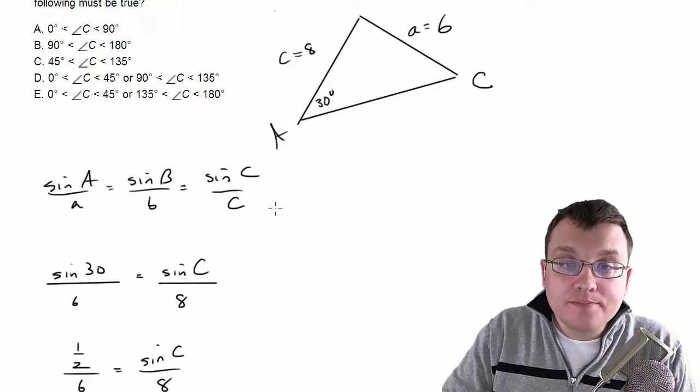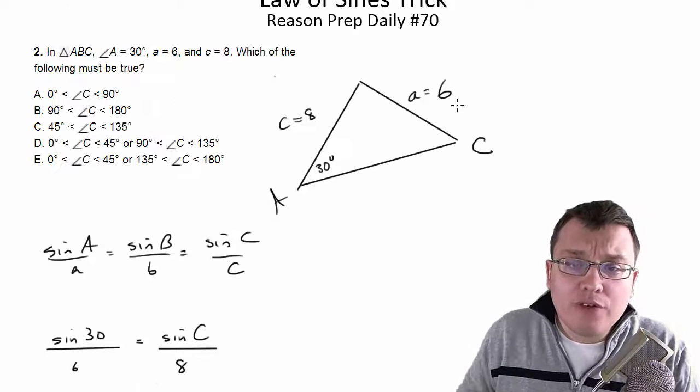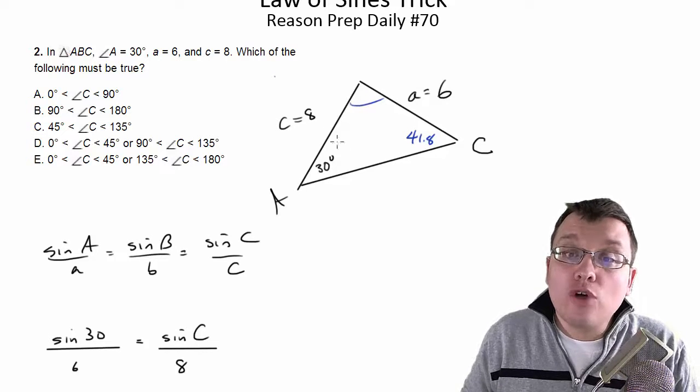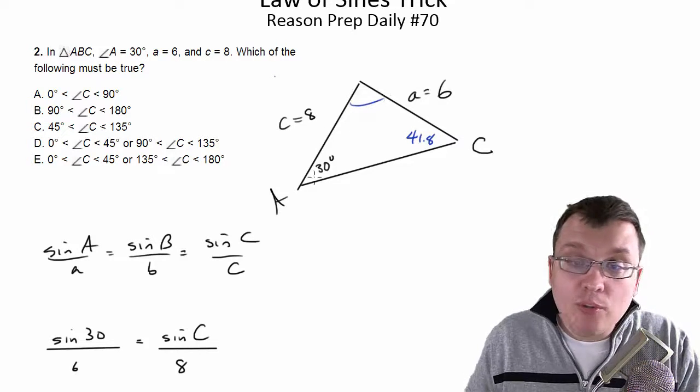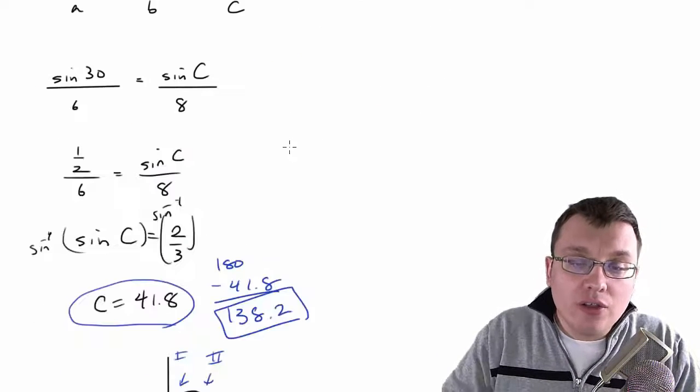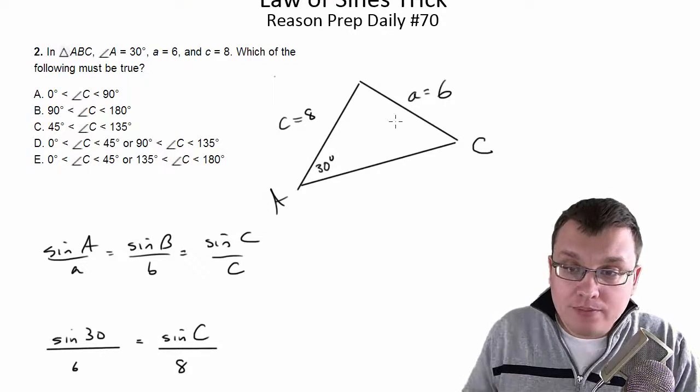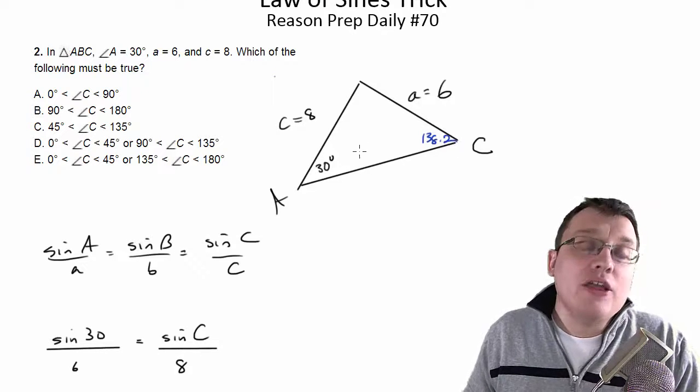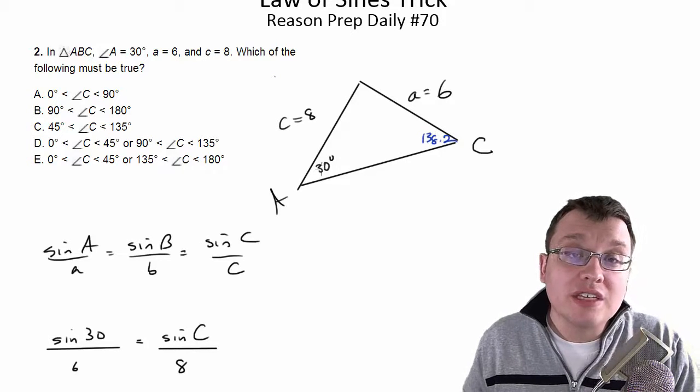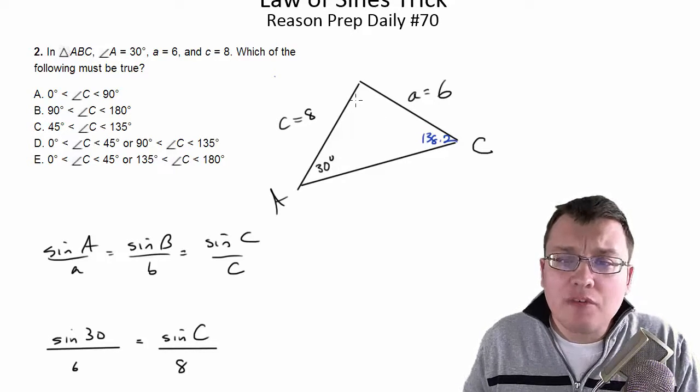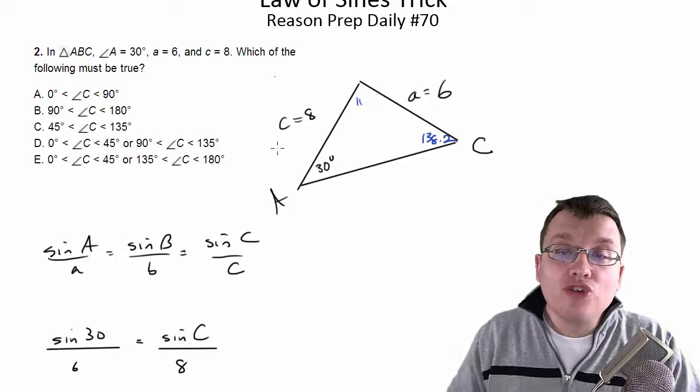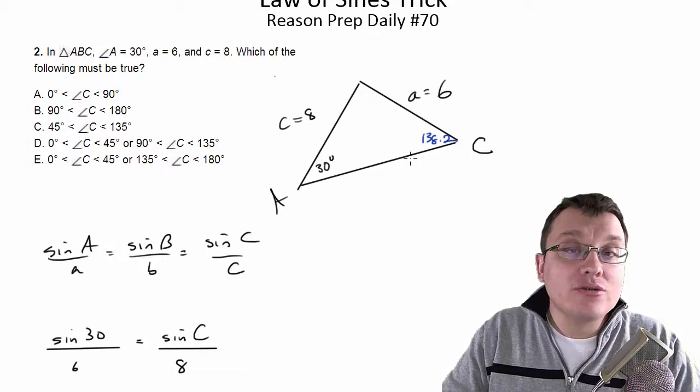So we go back. We see first, if I put in 41.8 for this, then this angle is going to be whatever's left over, right? 180 minus 41.8 minus 30 will be for this angle, no problem. What you do next, though, is you take your other answer, 138.2. And you ask yourself, can I build a triangle out of this? And indeed, I can. 138.2 plus 30 is 168.2. That leaves like 11.8 degrees for the third angle. We've got no problems. We've got a triangle. So in this case, I can get two answers that work.